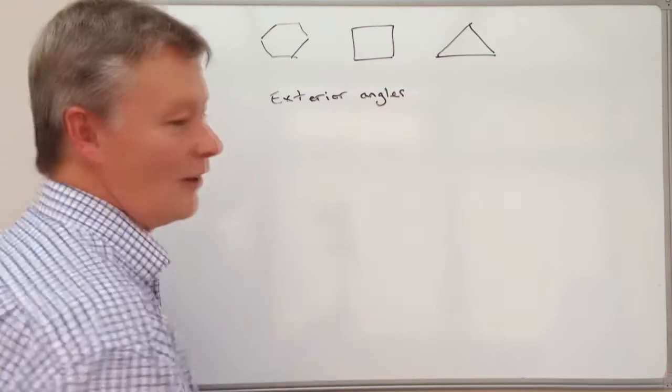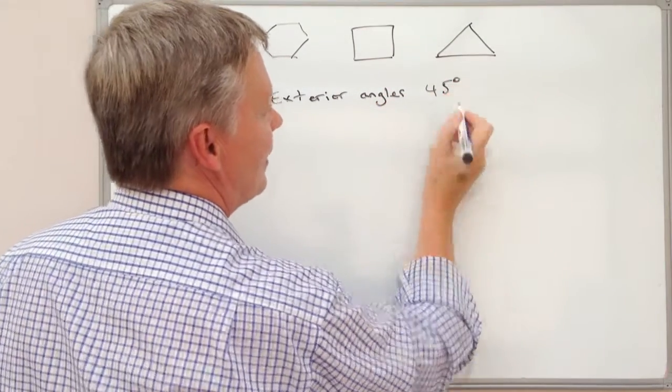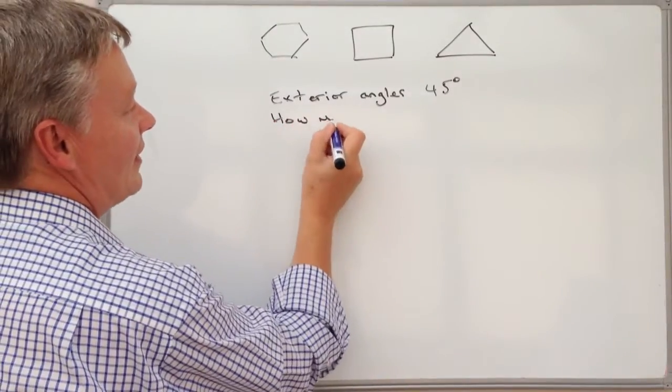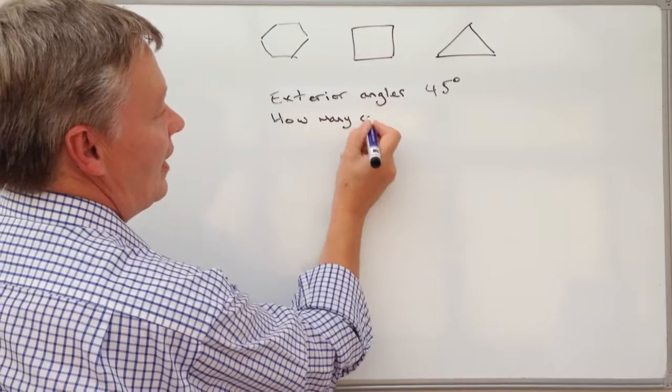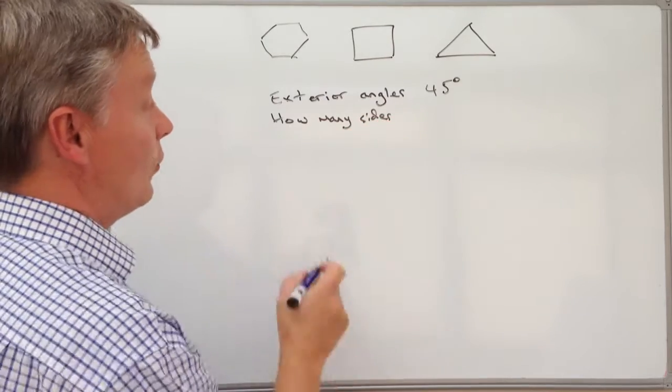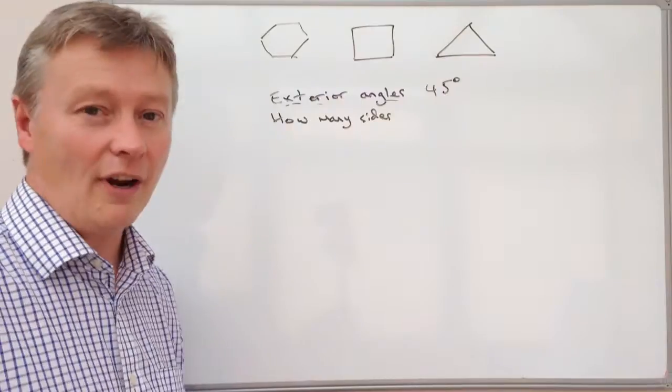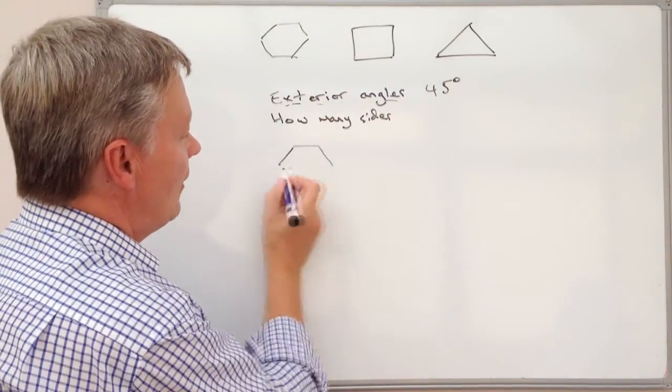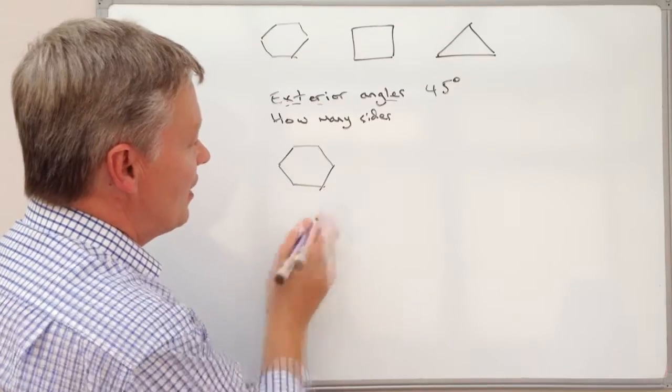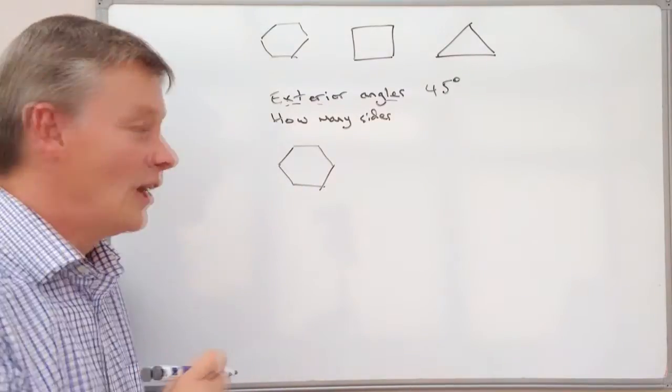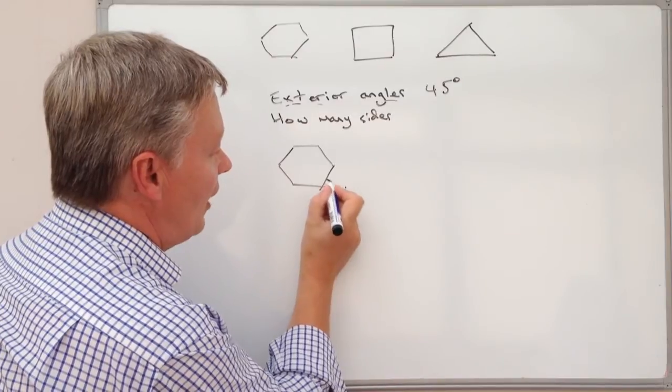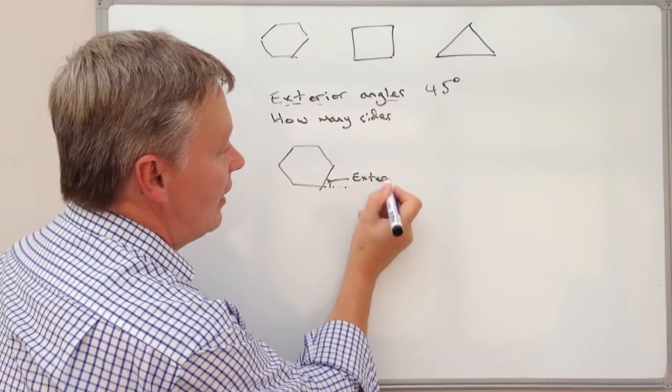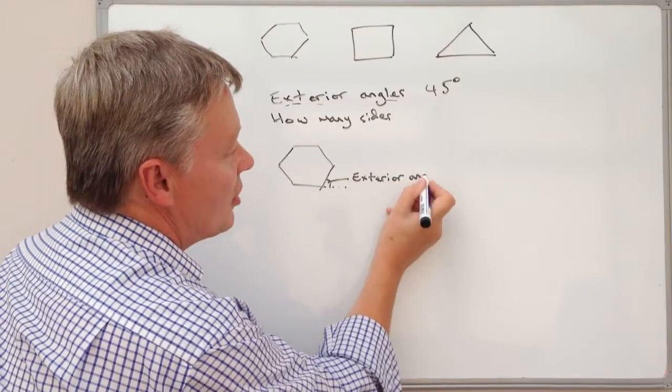The first thing is to know what an exterior angle is. Actually, the exterior angle - if I just look at my regular hexagon there, I hope you can see this on the video - what I'm going to do is just extend that a little bit, and this bit here is called the exterior angle.